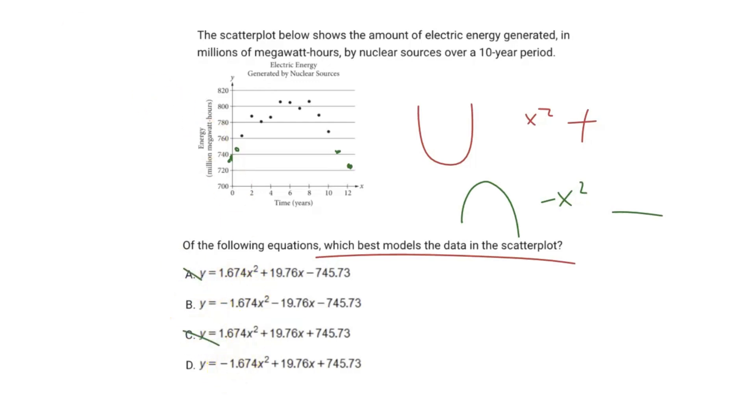The next thing we're going to do is find the relative y-intercept. We can see in choice B, we have a negative y-intercept. In D, we have a positive y-intercept.